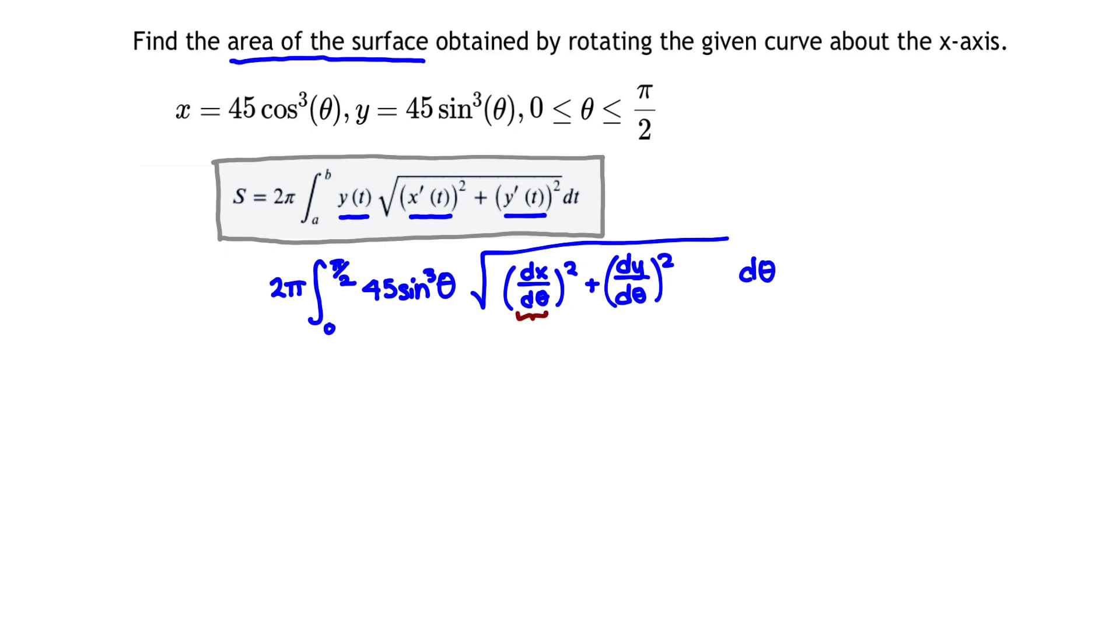This amounts to us finding two quantities, dx/dθ and dy/dθ. Now, x and y are both composition functions, so we're going to need our chain rule. So I'm going to rewrite x as 45(cos θ)³, so that when I take dx/dθ, I can employ the chain rule a little easier.